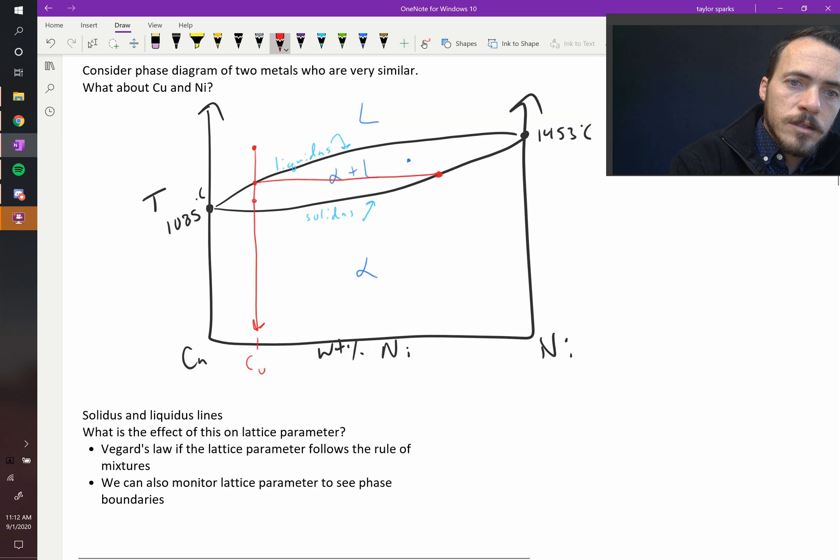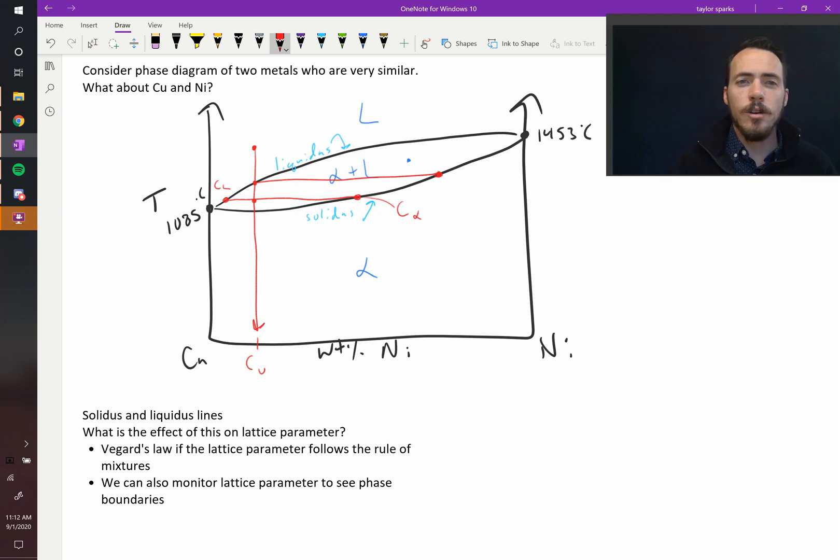Because let's say we're at this point, this temperature. Now the liquid and the solid compositions have changed. The liquid is over here. This would be the composition of the liquid, and this would be the composition of the solid. So the composition of these two phases are changing as you cool this down, assuming thermodynamic equilibrium, that you let this sit long enough.